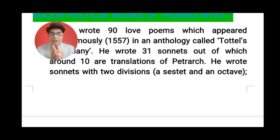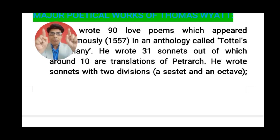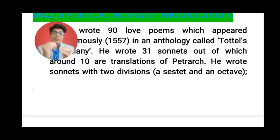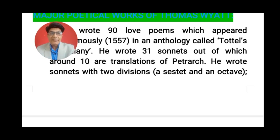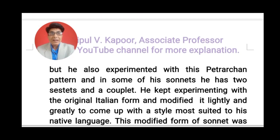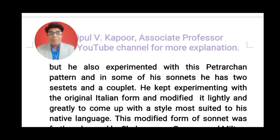When Thomas Wyatt wrote his sonnets, he divided them according to the sonnet form — written in 14 lines. Petrarch, the Italian poet, wrote sonnets in two divisions: one sestet and one octave. A sestet means a stanza of six lines and an octave a stanza of eight lines. Thomas Wyatt, when he wrote sonnets in English, followed the same pattern of a sestet and an octave. But he was not simply an imitator.